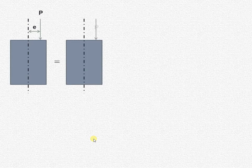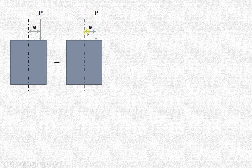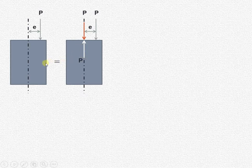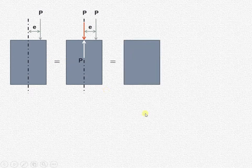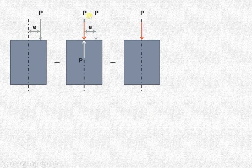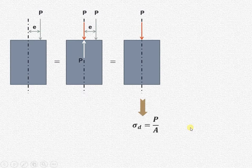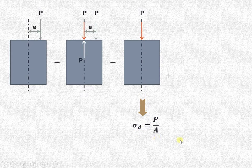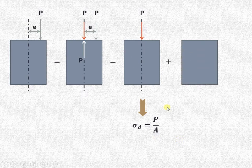We can draw the equivalent figure for this arrangement. First we have shown the original load p acting at a distance of e. Now we add a load p in the upward direction as well as in the downward direction. The resultant of this two-force system will be zero, so both systems — the original and the modified — are the same. The load p acting along the axis will produce the direct stress, which is force upon area.